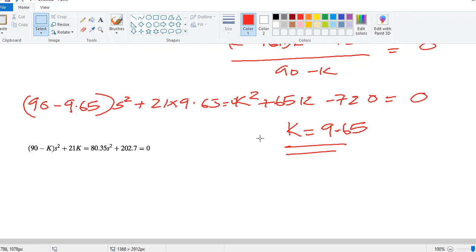You will see that it becomes 80.35 s squared plus 202.7 equals zero. And then if you find the value of s, that is if you substitute this one, you will get it as minus 202.7 divided by 80.35 equals s squared. And if you take the square root of this one, you will get it as plus or minus 1.59j.